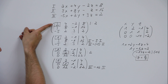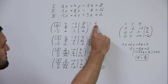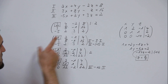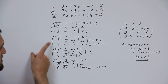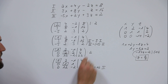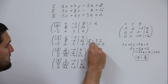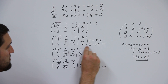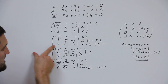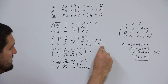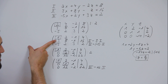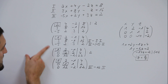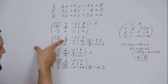Divide the whole first line through the pivot element — dividing by two gives one, etc. Then always the same steps: line two minus whatever stands here times one, line three minus whatever stands here times one. For example, in line two: three minus three times one is zero, eight minus three times two is two, etc.